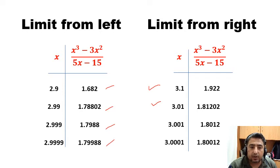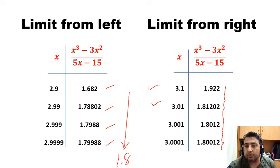You notice that these values are going to 1.8; we have a very clear feeling about these numbers. And what about these numbers? These are also moving, going to 1.8. So from left and from right, when we move to x equals 3, the values of the function are also approaching 1.8.